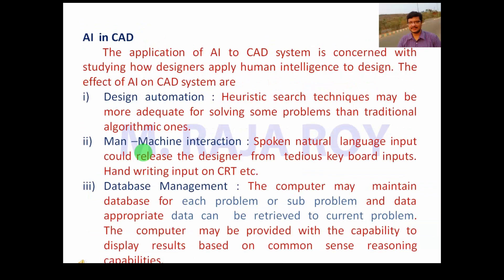AI in CAD: The application of AI to CAD systems is concerned with studying how designers apply human intelligence to design. The effects of AI on CAD systems are: Design automation — heuristic search techniques may be more adequate for solving some problems than traditional algorithmic ones. Man-machine interaction — spoken natural language input could release the designer from tedious keyboard inputs, handwriting input on CRT, etc. Database management — the computer may maintain a database for each problem or sub-problem and appropriate data can be retrieved for the current problem. The computer may also display results based on common-sense reasoning capabilities.